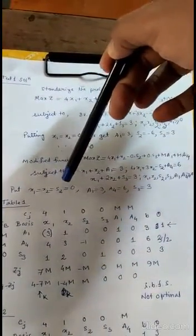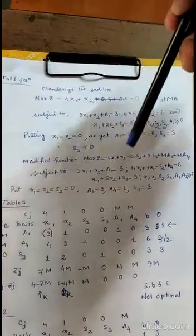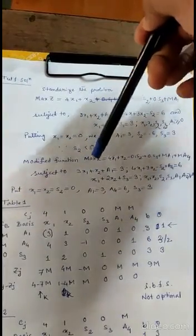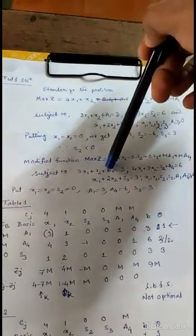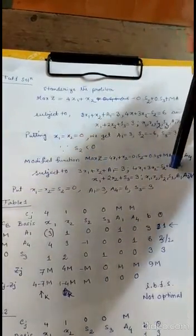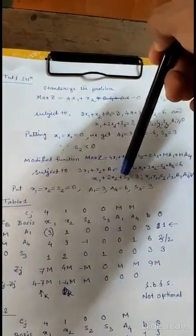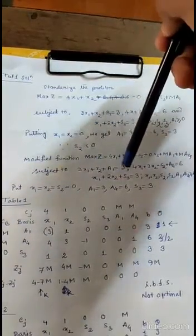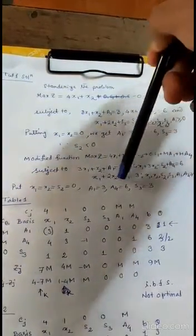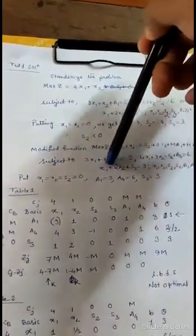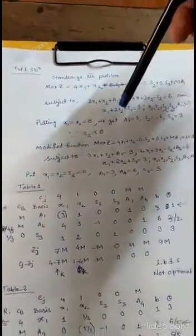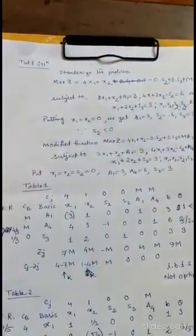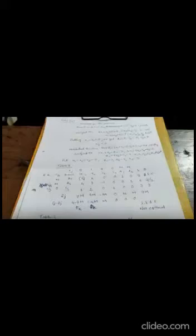So we add A4 to that constraint and the other two remain the same. Now put X1 = 0, X2 = 0 so that you get the values of A1, A4, and S3. Putting X1, X2, and S2 equal to 0 in all the equations gives you these initial values. Then move on to Table 1.